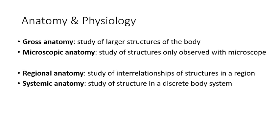We can also talk about things in terms of regional versus systemic. Regional anatomy looks at interrelationships between structures in a given region of the body — for example, everything going on inside your head. Systemic anatomy focuses on a single body system, which doesn't necessarily all have to be in the same region. For example, the skin — the integumentary system — covers the entire body, so you couldn't really talk about it in a regional way. So regional focuses on an area like the head or thorax, while systemic focuses on a single system like respiratory, digestive, or integumentary.